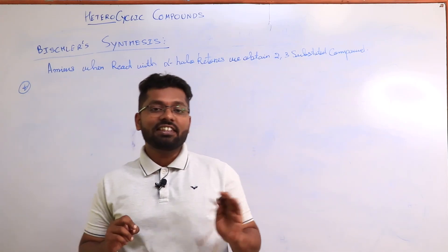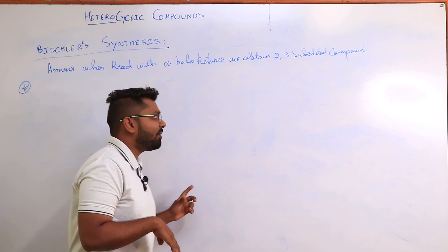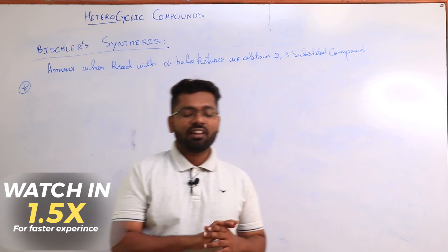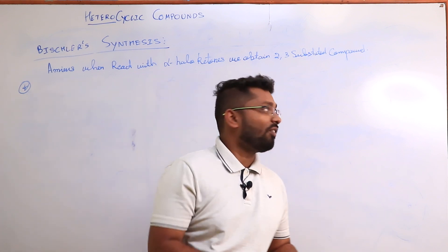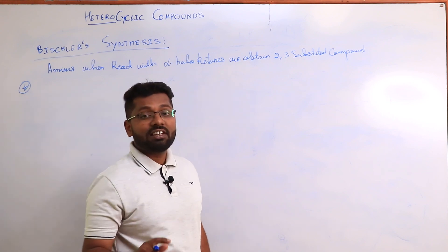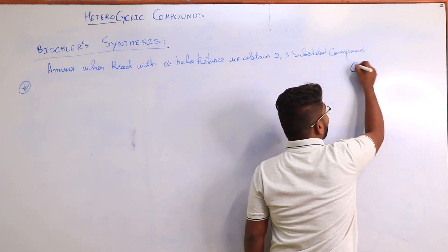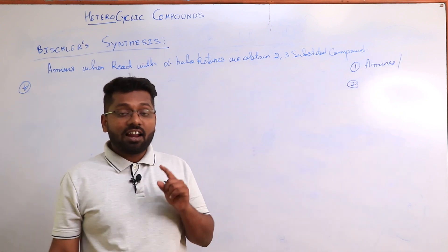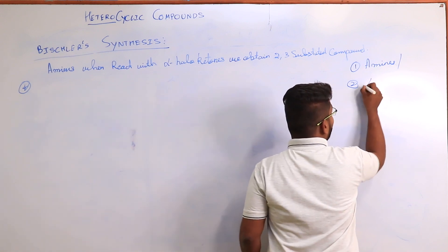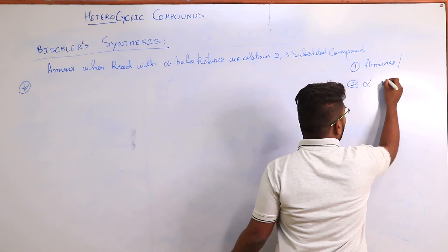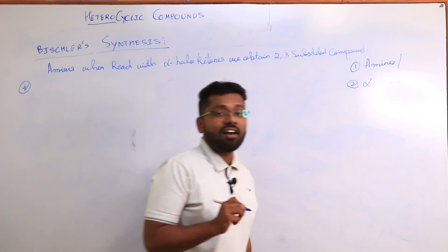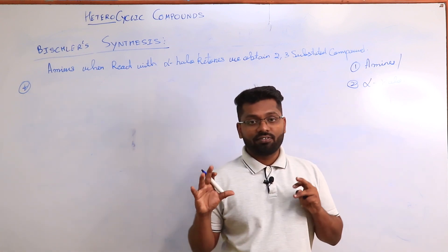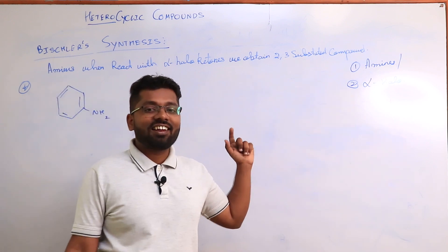Let me get on to the next synthesis of the indole molecule itself — we are talking about Bischler's synthesis. How to identify and remember this: one amine is used, and something very specific to Bischler's synthesis is that an alpha halogen is present. Alpha halogen is present in Bischler's synthesis for the preparation of indole.